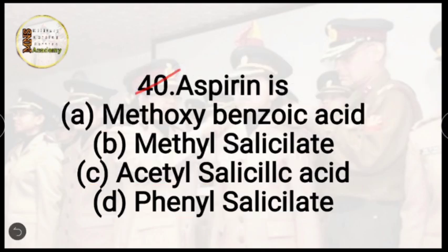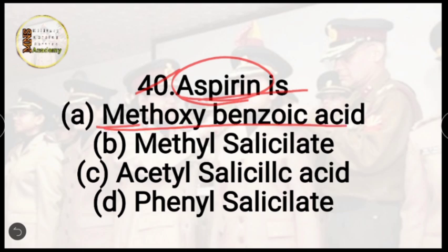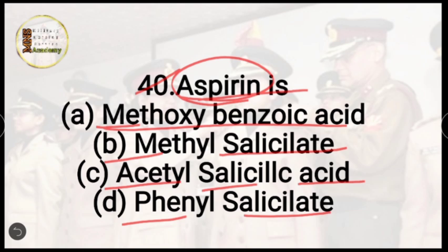Question number 40: aspirin — what is aspirin? Aspirin is basically a medicine, but we are asked about the chemical content in that medicine. Options are methoxybenzoic acid, methyl salicylate, acetylsalicylic acid, or phenyl salicylate. The correct answer is option C, acetylsalicylic acid.